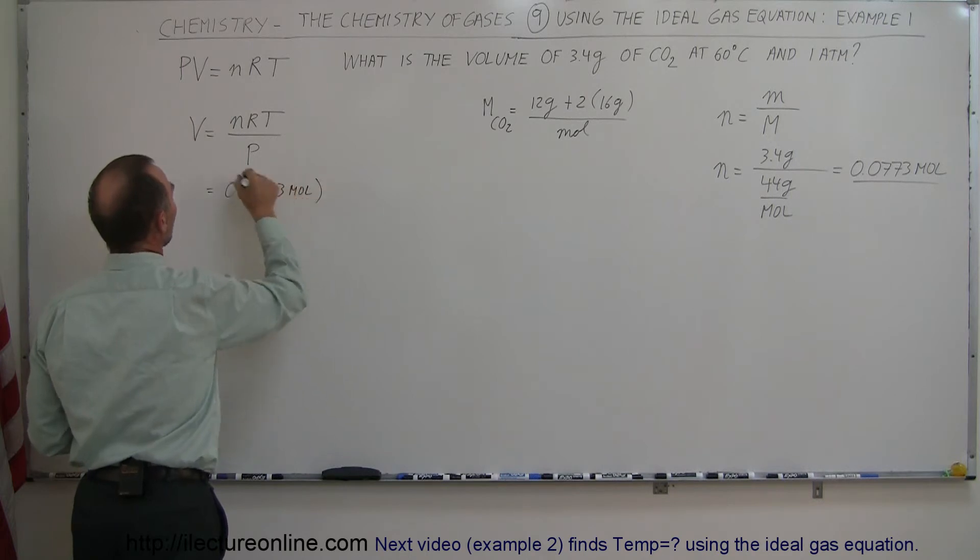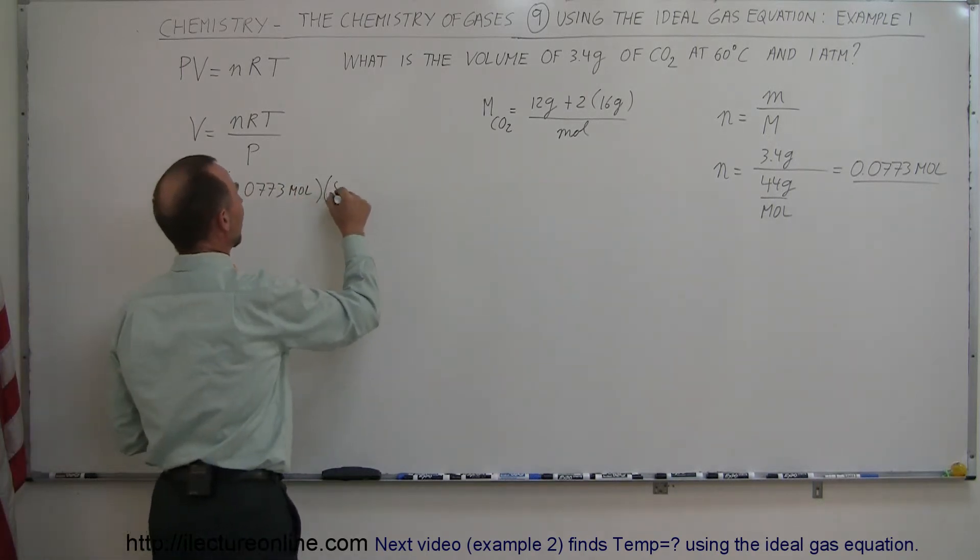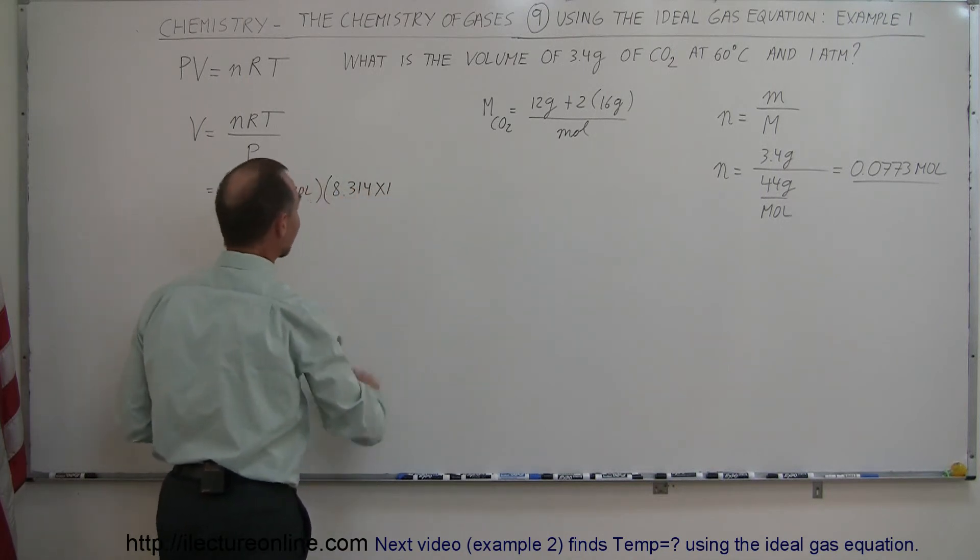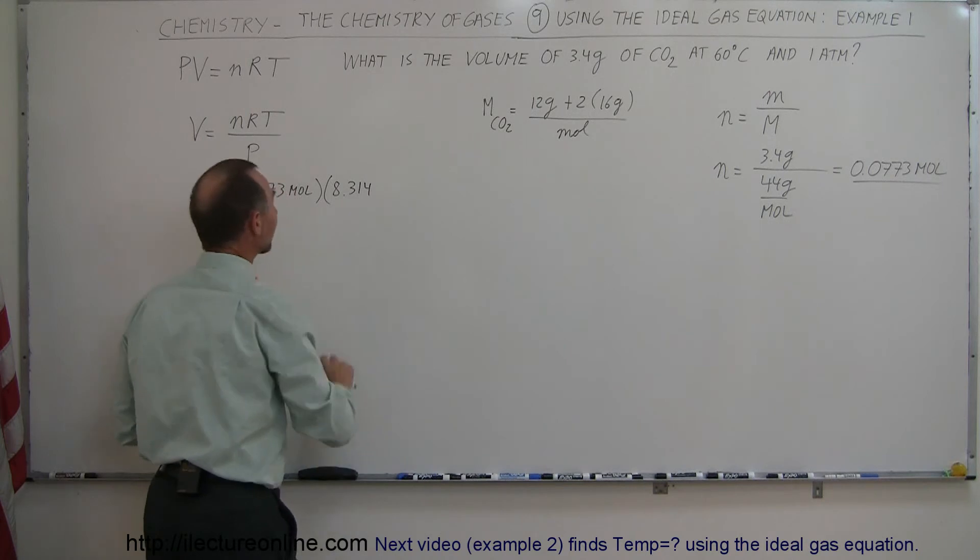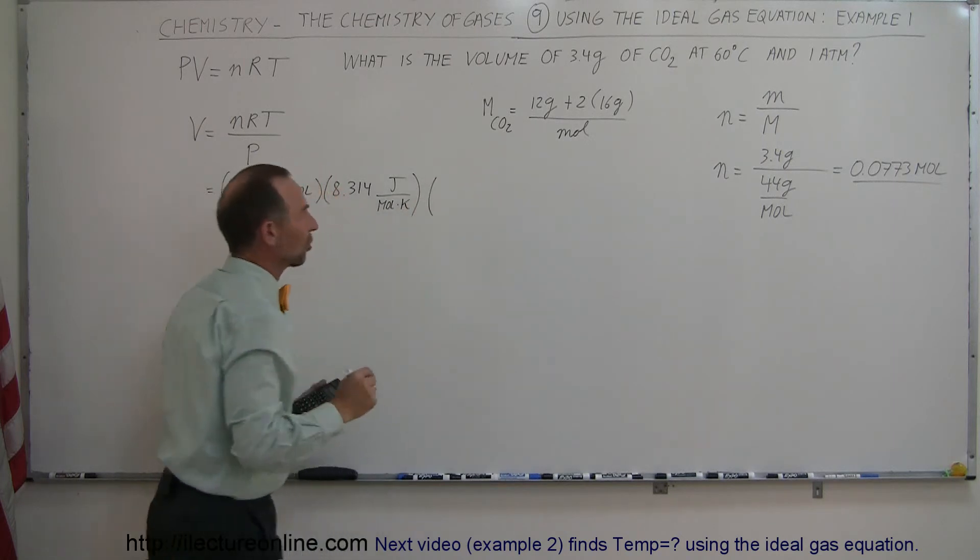Multiple times R. Now R is that gas constant, so that is 8.314, oh, not times 10, let's think about another constant, 8.314 joules per mole per Kelvin, times the temperature.